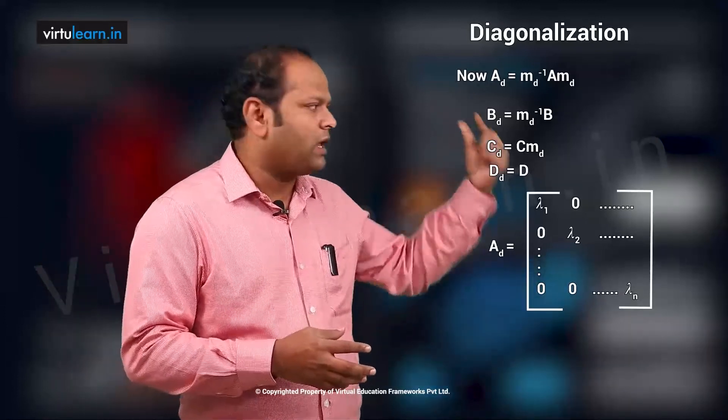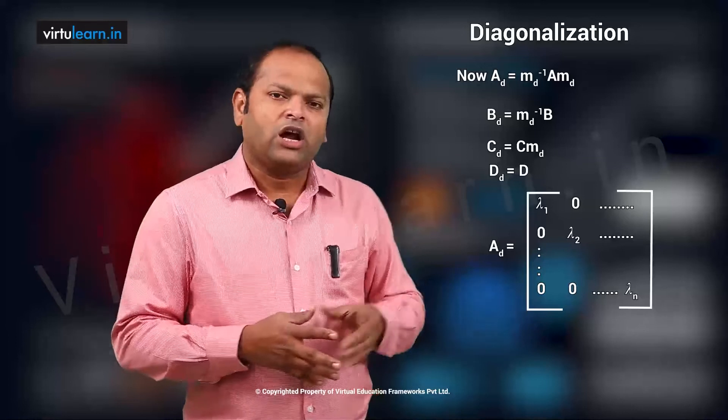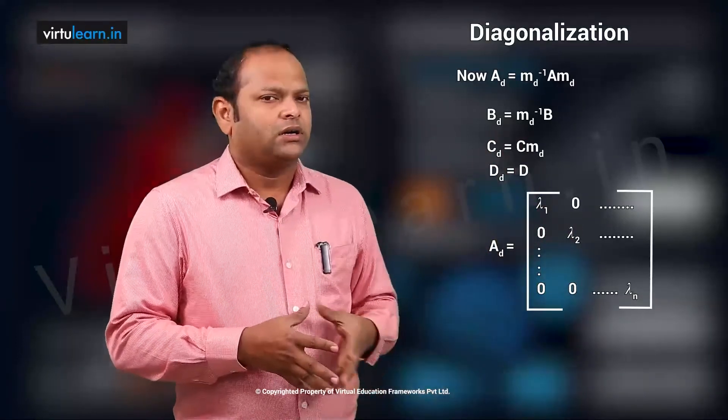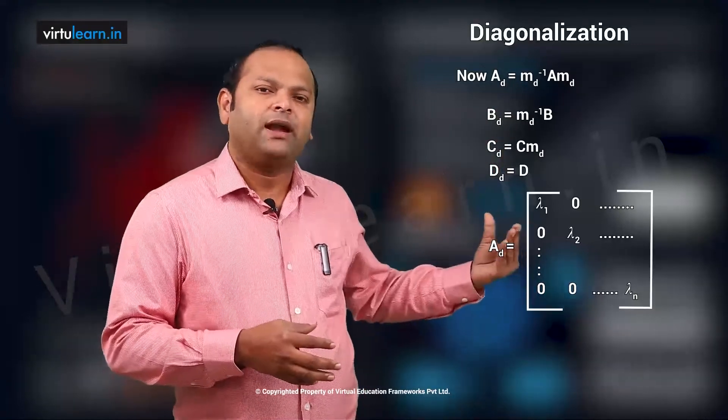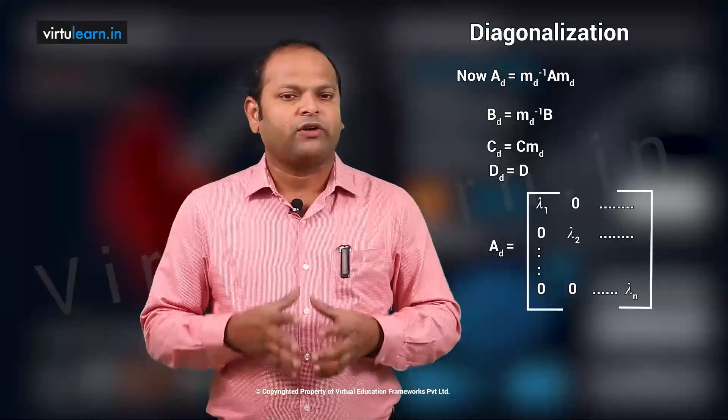So a_d is going to be we have all diagonal elements lambda 1, lambda 2 up to lambda n which are the eigenvalues of the system and remaining we have all zeros. So which is basically a diagonal matrix. So this way we can find out.